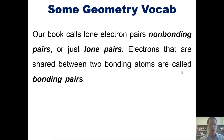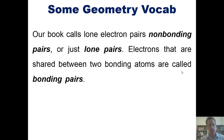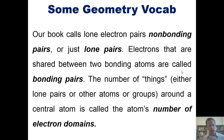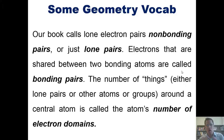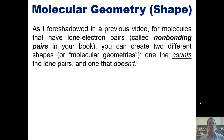Now let's cover some geometry vocabulary. Our book calls lone electron pairs 'non-bonding pairs' or simply 'lone pairs.' In contrast, electrons shared between two atoms are called 'bonding pairs.' The total number of groups or lone pairs around a central atom is called the atom's number of electron domains. Pause the video if needed to make sure you have these terms down.